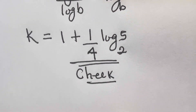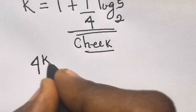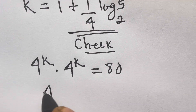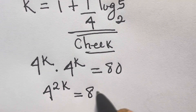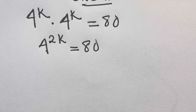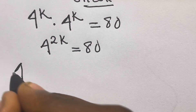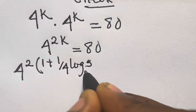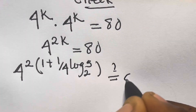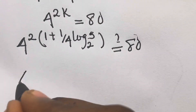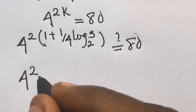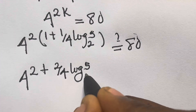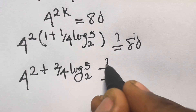Let's check. We have 4^k multiplied by 4^k equals 80, so we have 4^(2k) equals 80. Substituting the value of k, we have 4 to the power of 2·(1 + (1/4)·log₂5) equals 80.